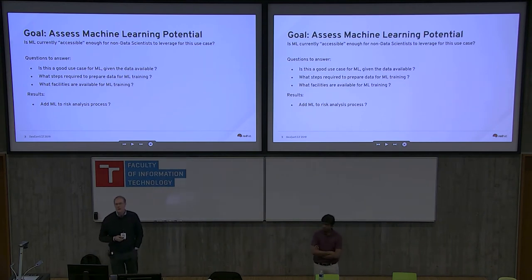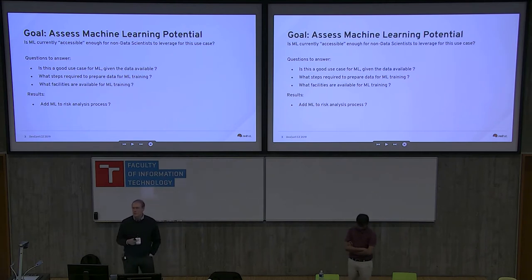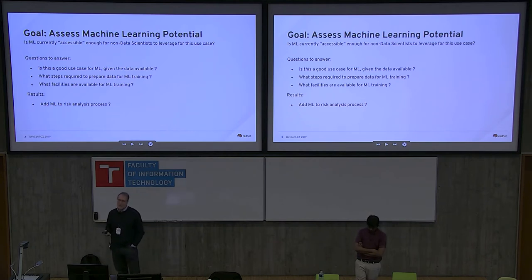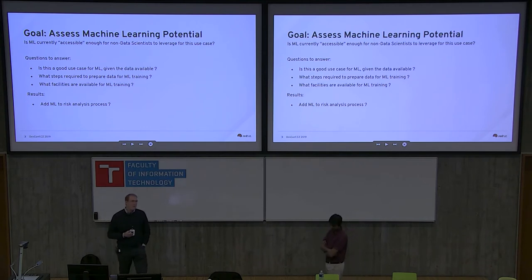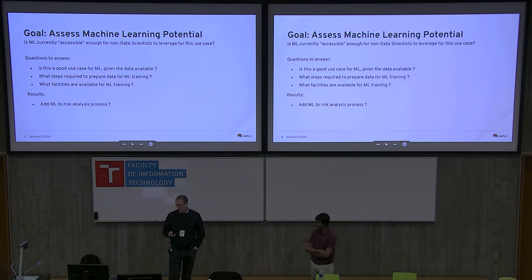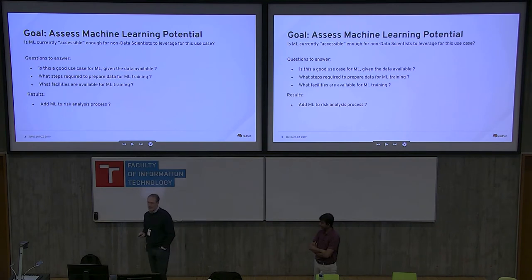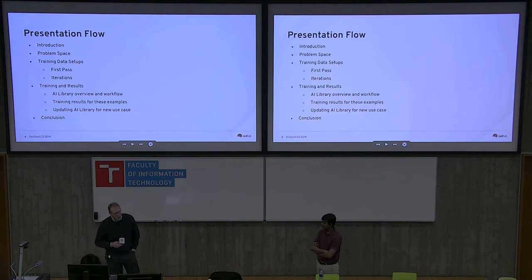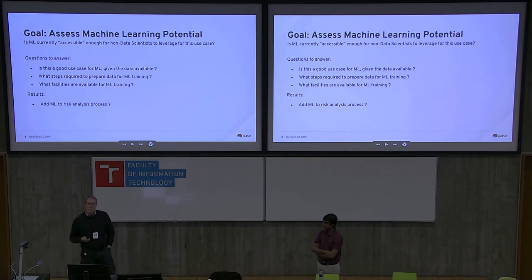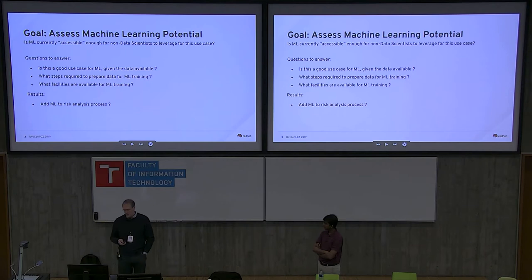For our use case, is machine learning a viable option? Do we have the data that we would need to do the training that machine learning would require to be effective? If we do have that data, what steps would we need to undertake as non-developers and non-data scientists to get it ready for the process? And then once we have some training data prepared, how would we get that into a training algorithm? That's where we leaned on the AI Center of Excellence with Dr. Anbalagan. Once we answer that question, we would make a determination: do we want to add machine learning to our risk analysis process?